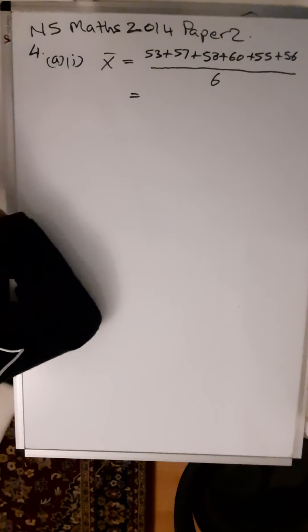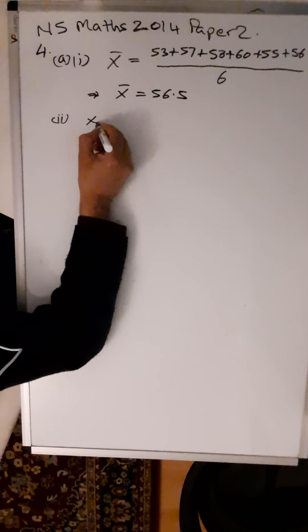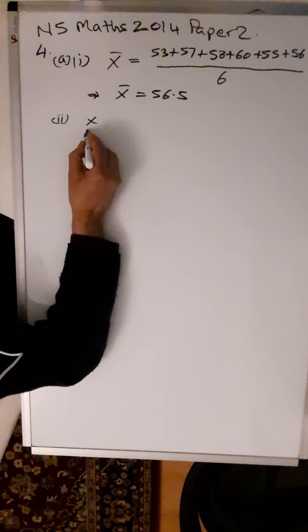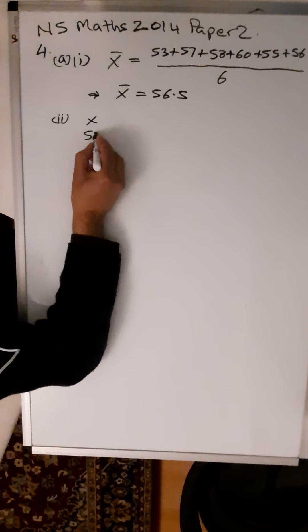So you put that in the calculator. Mean is the sum of the results divided by the number of results. So you've got 53 plus 57 plus 58 plus 60 plus 55 plus 56, and you divide by the number of results, which in this case is 6.